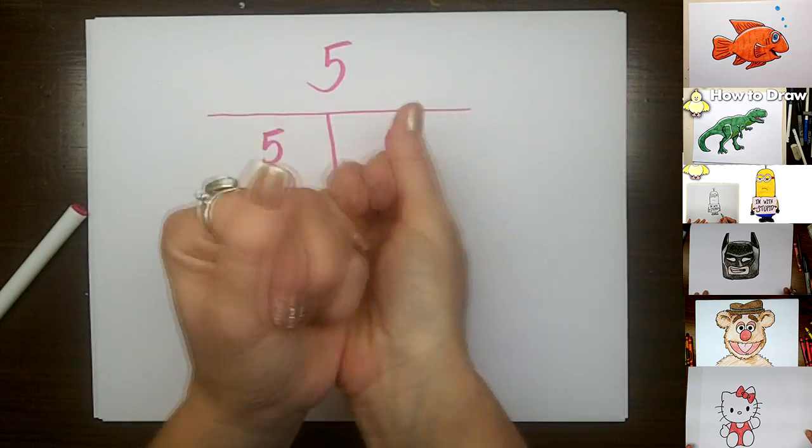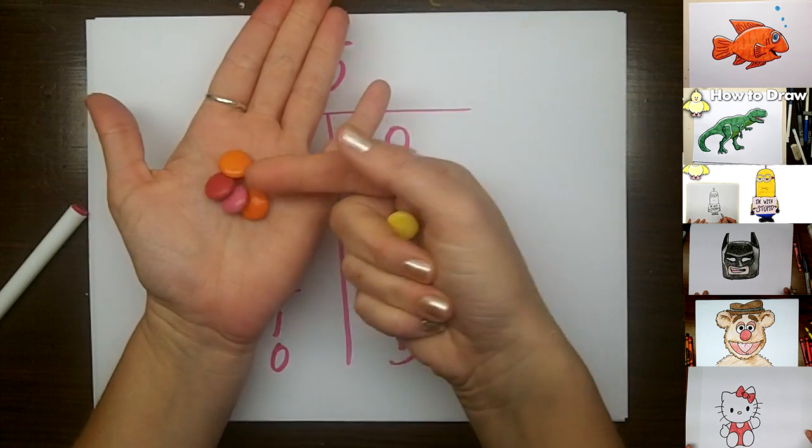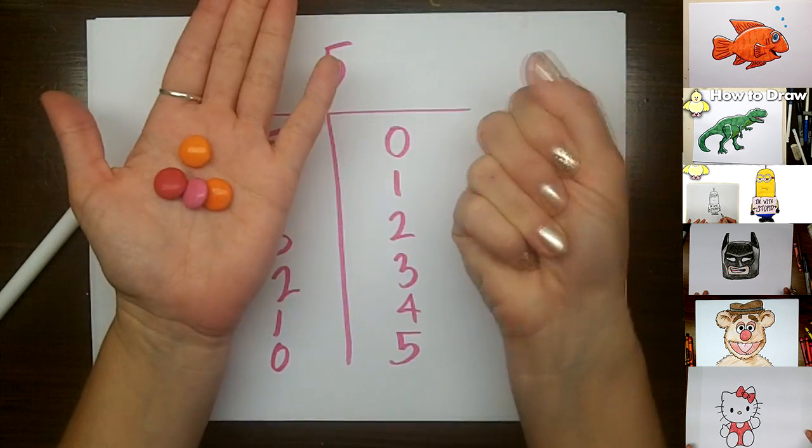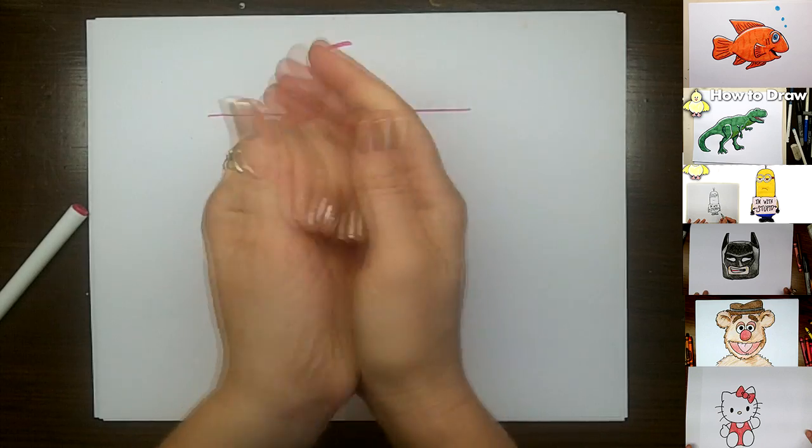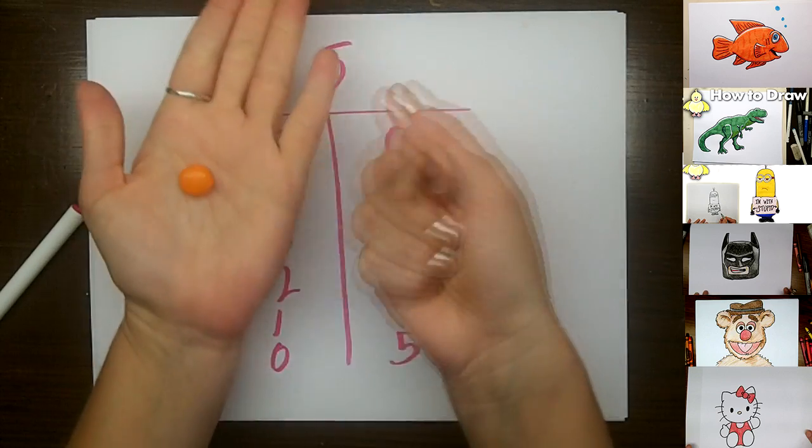So again you could shake it and you could have some in one hand and some in another. So if I have four in one hand, I must have one in the other.